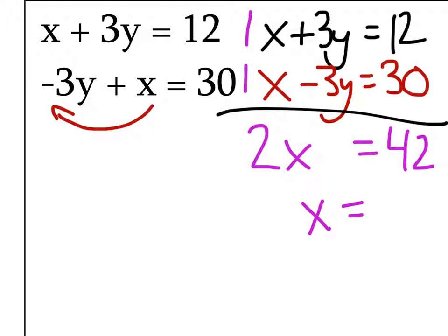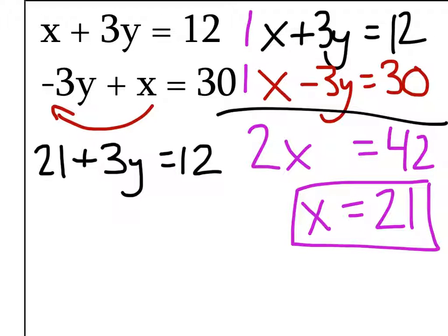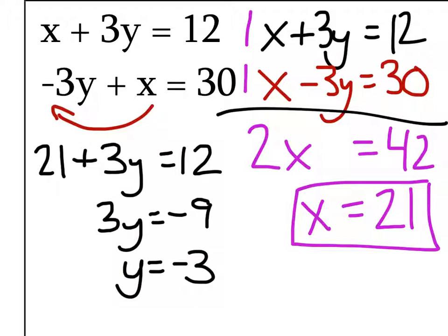So X equals 21. We still have to find the value of Y. Let's use the top equation: 21 plus 3 times Y equals 12. The switch and stay game gives you 3Y equals negative 9, so Y equals negative 3. As a coordinate pair, we've got 21, negative 3.